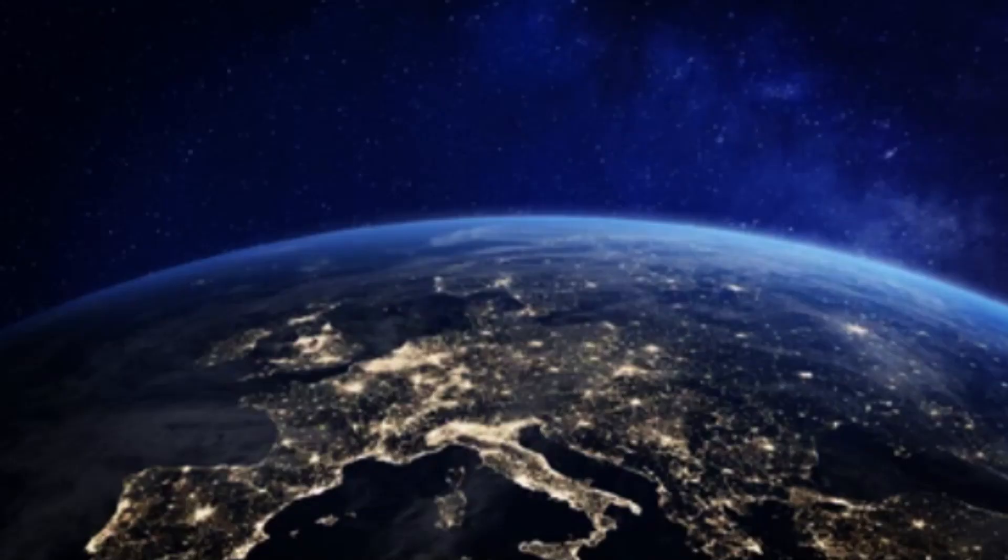Hydrosphere: The Earth's hydrosphere consists of all the water on the planet, including oceans, lakes, rivers, and groundwater. Water plays a critical role in shaping the Earth's surface and climate, and is essential for life as we know it.